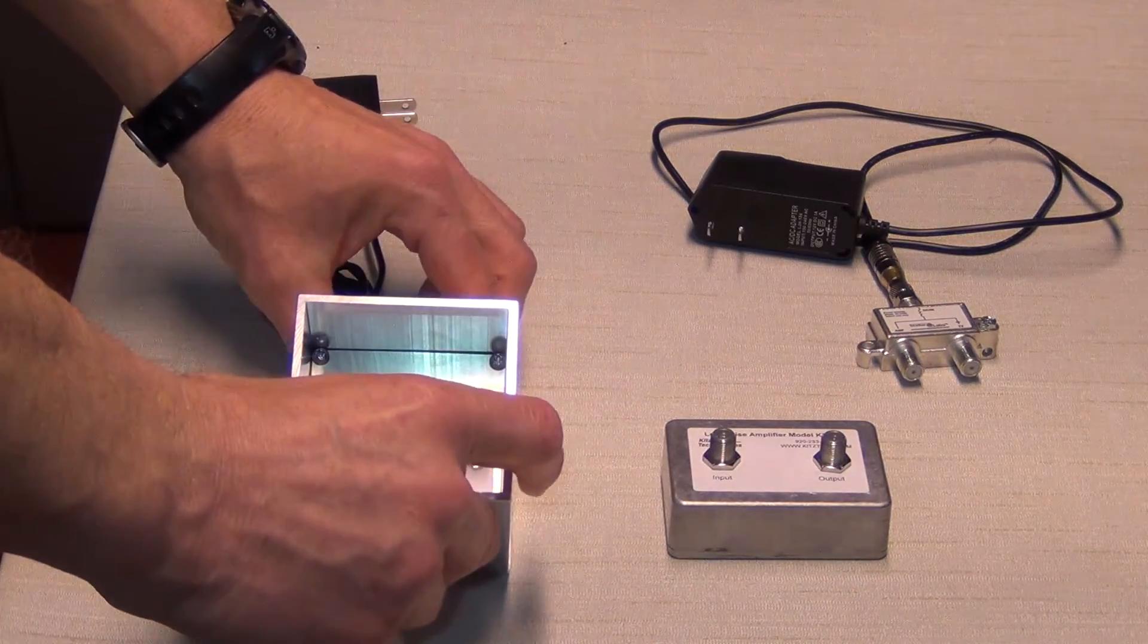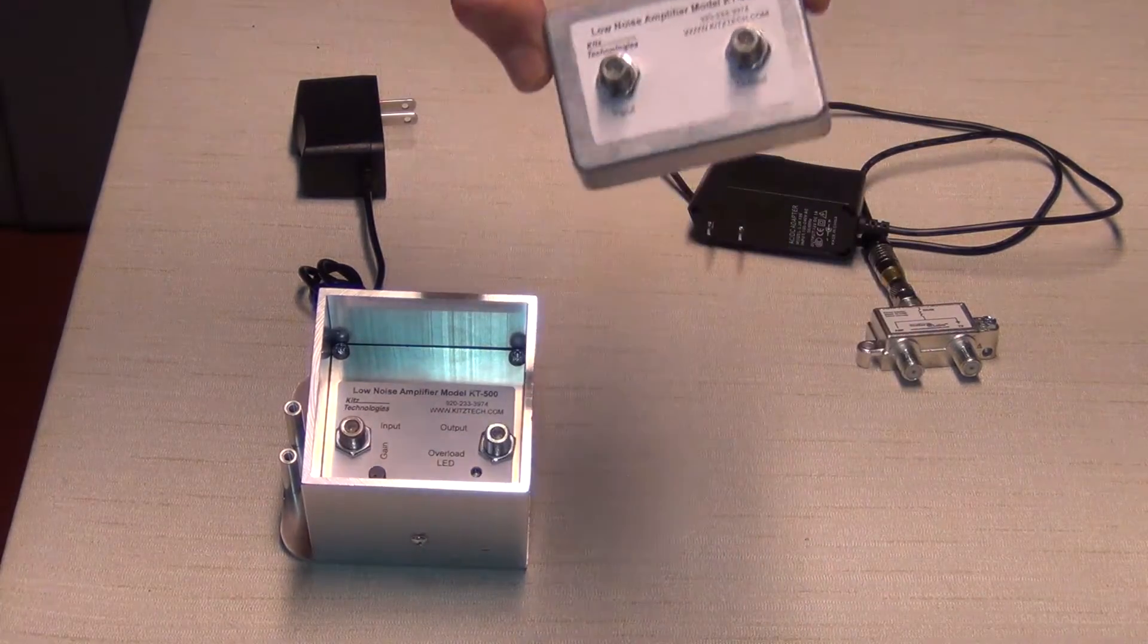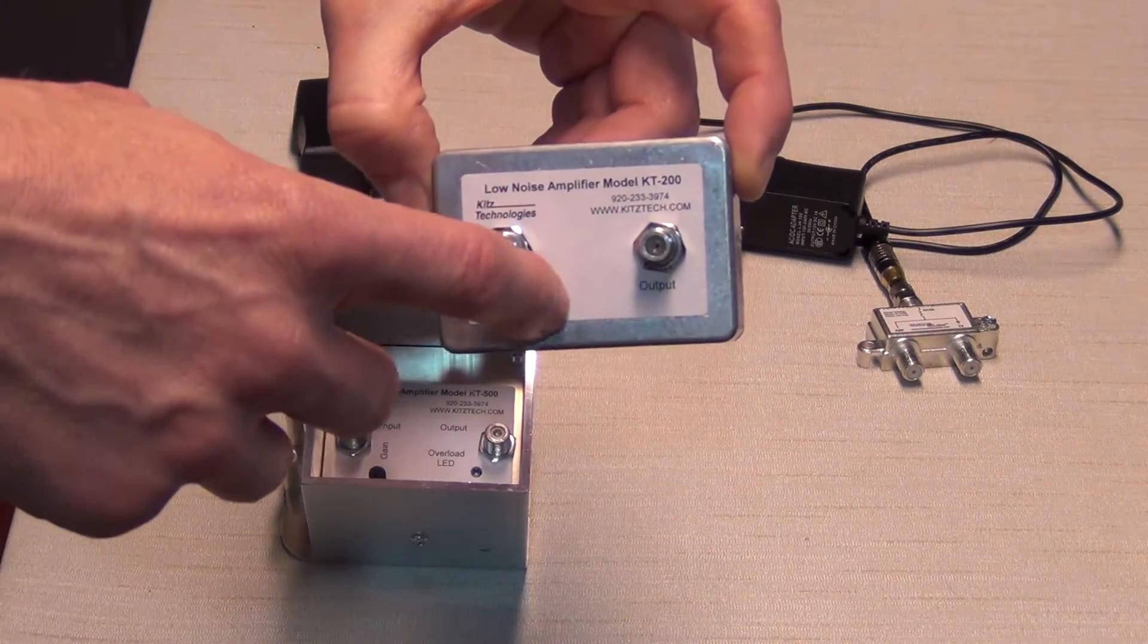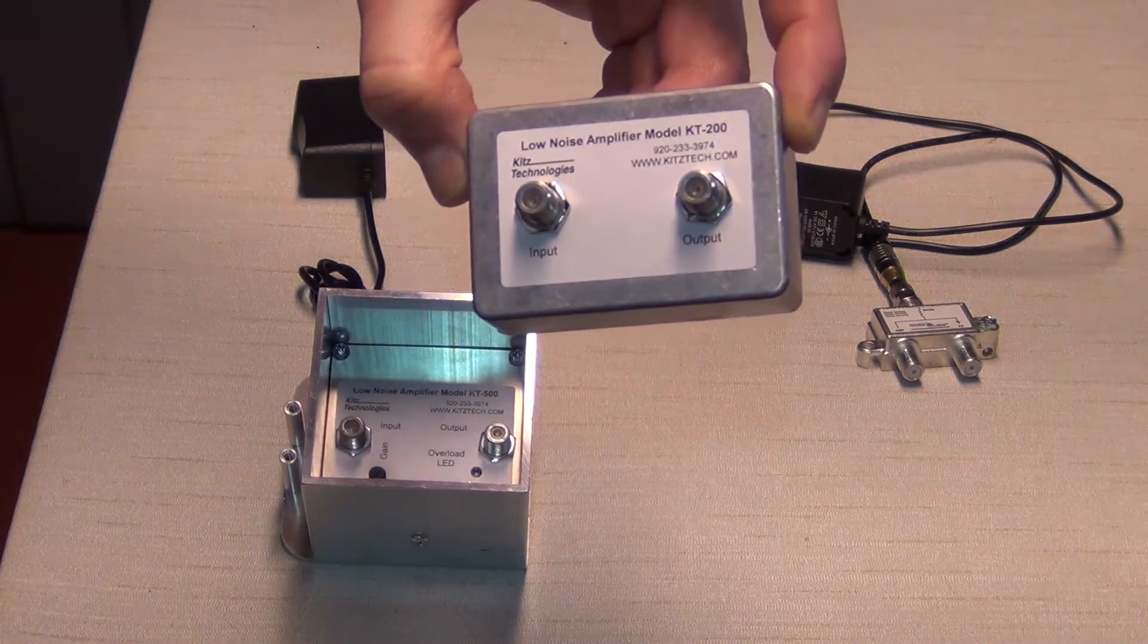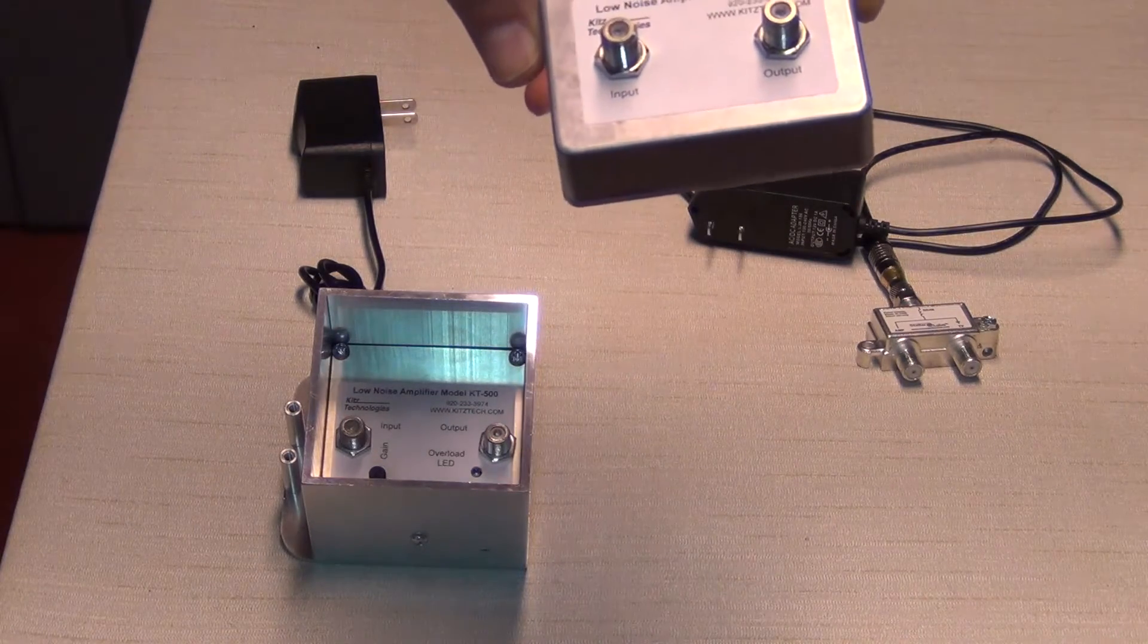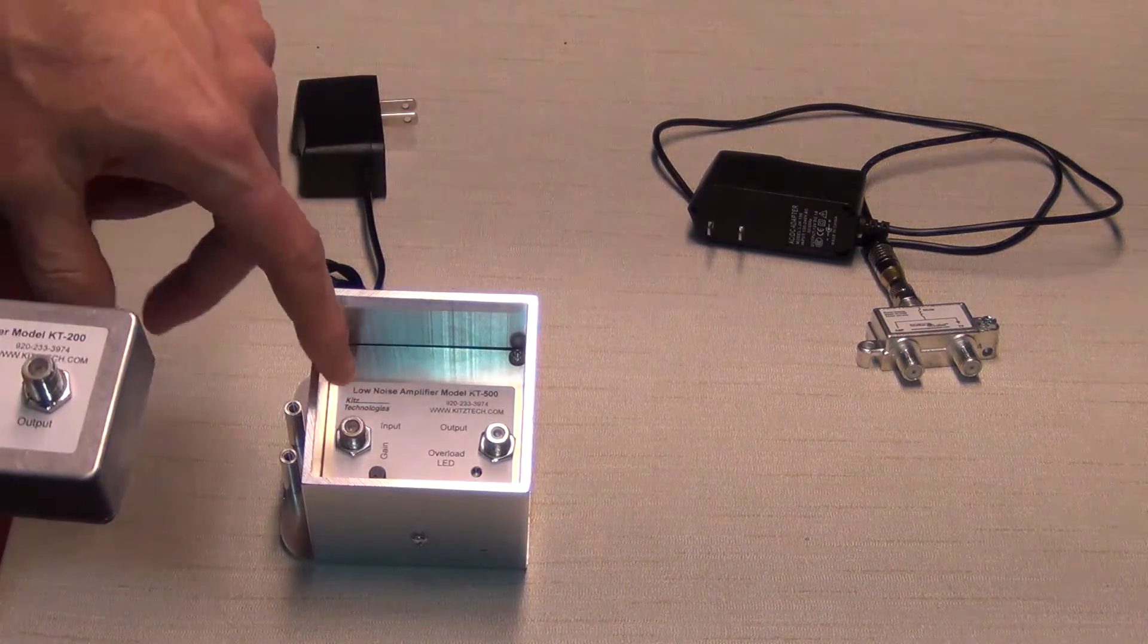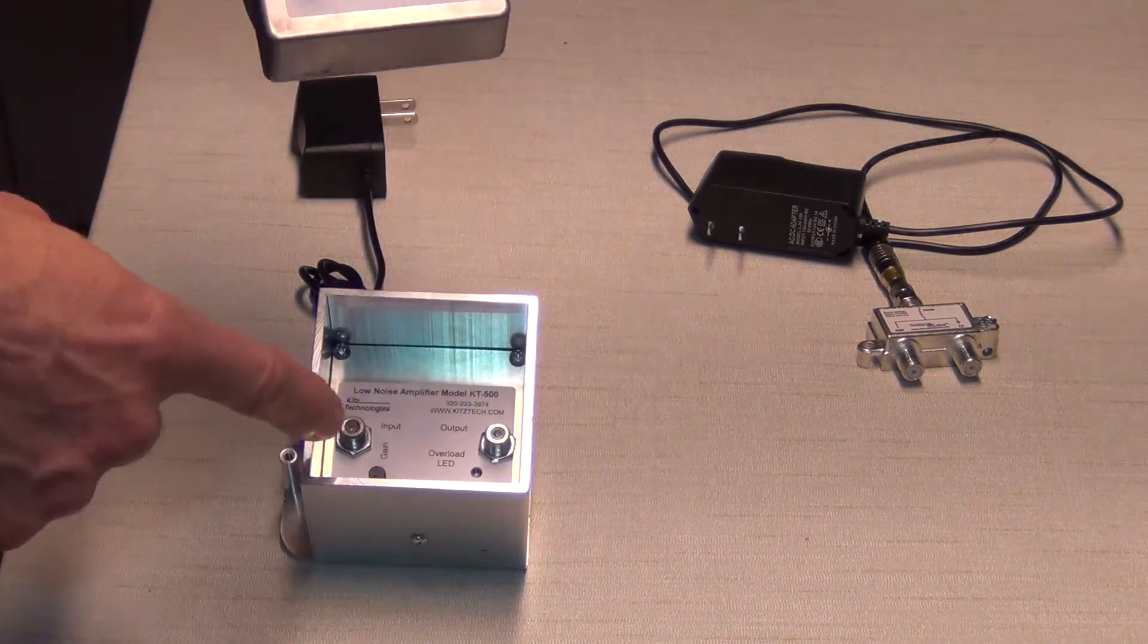And prior to this weatherproof box type design, the KT500 that I had before came in this type of a box, the variable adjustable gain down here. But this one right here is the KT200 which is the fixed gain and this also now you can get in the coax version and the weatherproof box like this one right here. So both of these now come in this type of box.